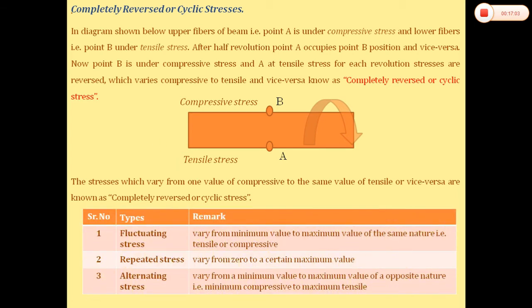We have three types of stress under cyclic loading. First is fluctuating stress, which varies from a minimum to a maximum value of the same nature — for example, tensile only, ranging from 10 MPa to 150 MPa, with no compression. Second is repeated stress, which varies from 0 to a certain maximum value. Third is alternating stress, which varies from a minimum value to a maximum value of opposite nature — for example, minimum compression to maximum tension.